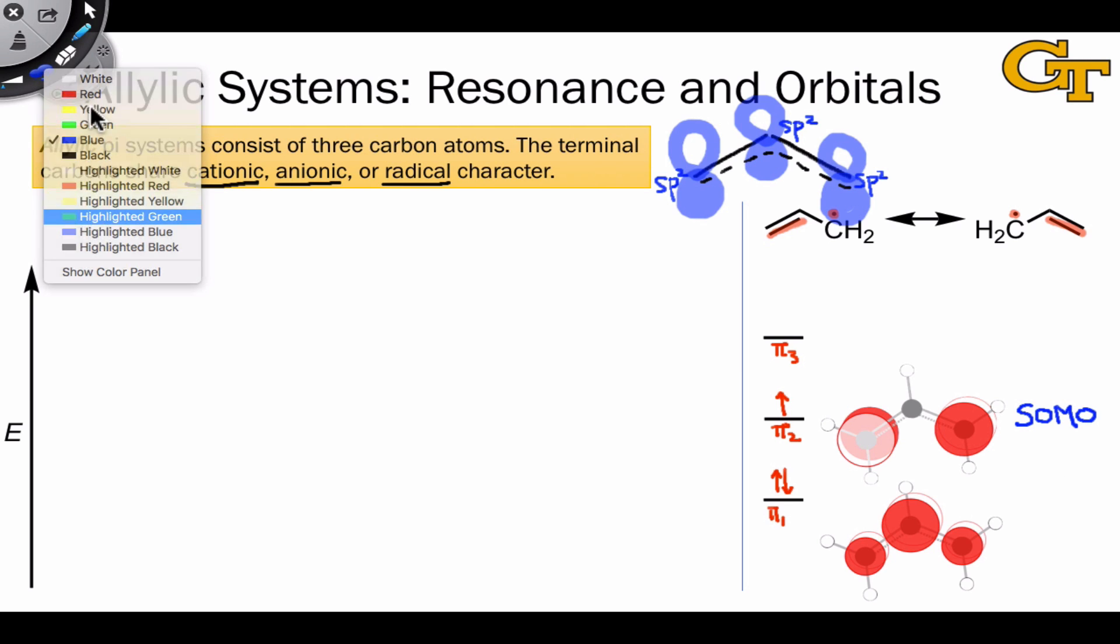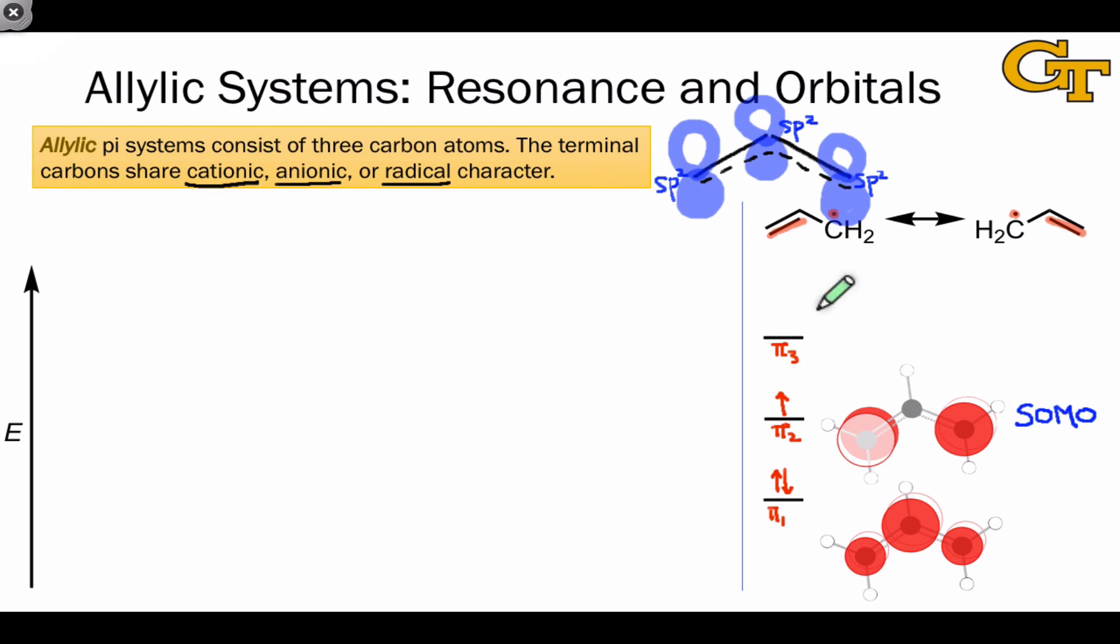The main thing I want to draw your attention to here is that the locations of orbital density within pi 2, these outer two carbons, correspond to the locations where we find radical character in the resonance structures. That's not a coincidence. This speaks to the connection between the resonance picture and the pi molecular orbital picture. Where we find radical density is where we find lobes in the half-filled molecular orbital.